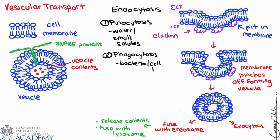Next, let's consider phagocytosis. Phagocytosis is for capturing and destroying bacteria, cell debris, and other unwanted material. The cell recognizes the bacteria, swarms around it, and pinches off to form a vesicle with the bacteria inside. In this case, we're very likely going to fuse with an endosome and then a lysosome to actually digest or destroy the bacteria.